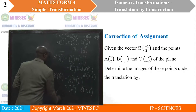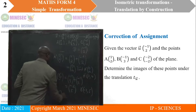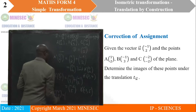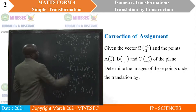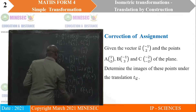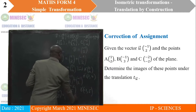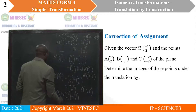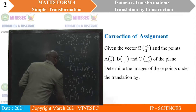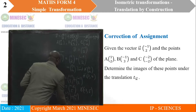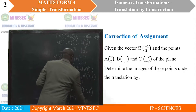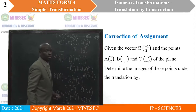Then C prime, with coordinates (x prime, y prime), is equal to C with coordinates (-2, -2) plus the translation vector (-1, 2). When we add this, we have (-3, 0). So C prime has coordinates (-3, 0).